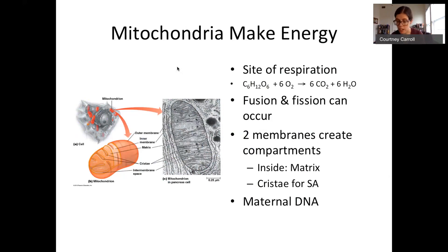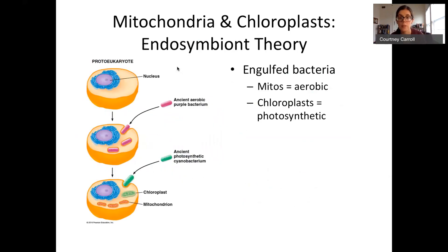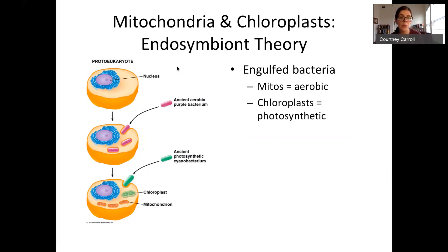Mitochondria and their DNA help us understand the endosymbiotic theory, which is that organelles like mitochondria and chloroplasts arose from the engulfment of one cell by another. We had a proto-eukaryote that had a nucleus and it engulfed an ancient aerobic bacteria that became the mitochondria. For plant cells, they might have engulfed an ancient photosynthetic bacteria that became the chloroplasts.